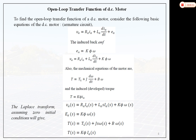Now we take the Laplace transform to obtain transfer functions. Taking the Laplace transform of the armature voltage equation gives: Va(s) = Ra·Ia(s) + La·s·Ia(s) + K·φ·Ω(s). The back EMF equation becomes: Ea(s) = K·φ·Ω(s). The torque-speed equation becomes: T(s) = TL(s) + J·s·Ω(s) + B·Ω(s). The torque equation gives: T(s) = K·φ·Ia(s). Initial conditions are taken to be zero.